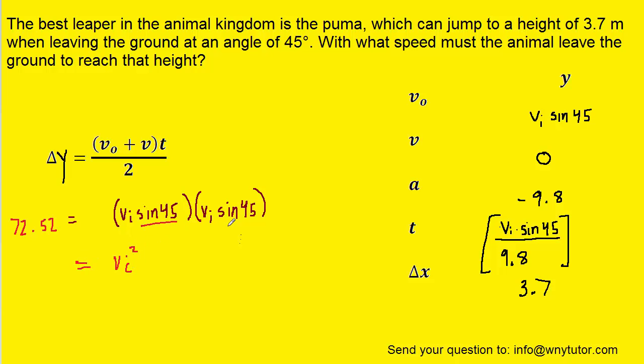Now we can multiply these terms here. Vi times vi will just become v initial squared. And then if you want, you can use a calculator to multiply sine of 45 times sine of 45, which if you do, you get one half.